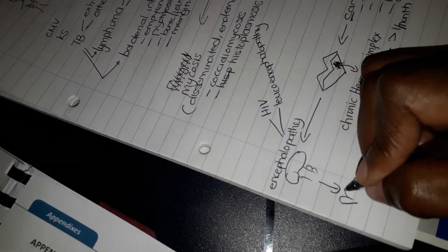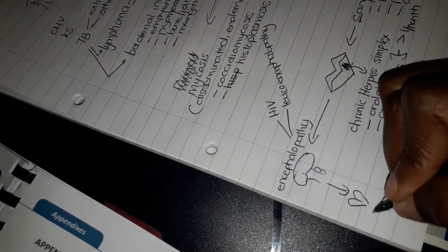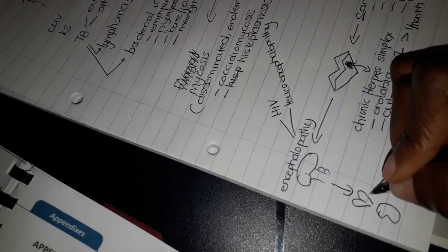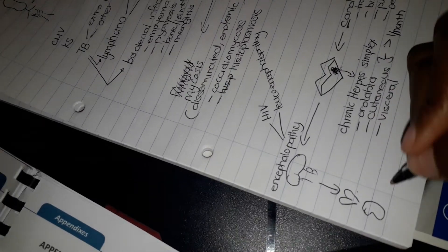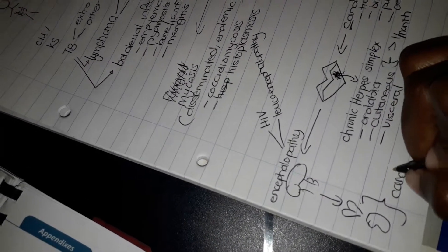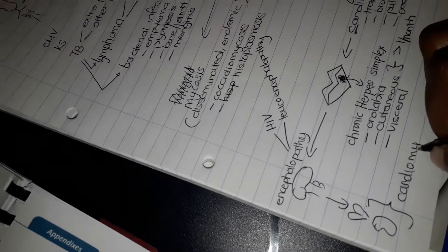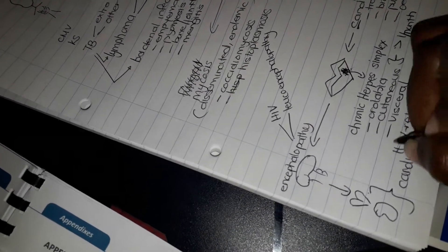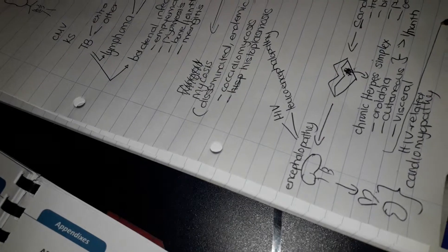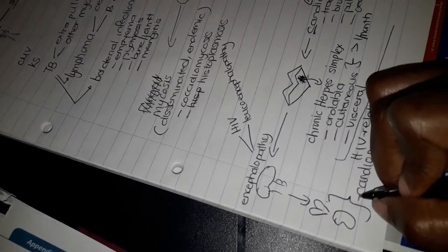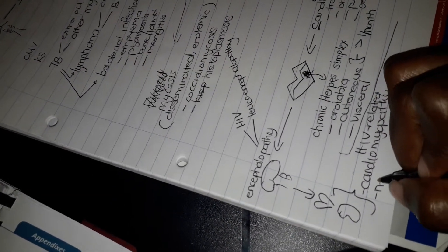We're done with the brain. Now we go to the heart and then we go to the kidneys. These, my dear friends, will remind us of cardiomyopathy, let's say HIV-related cardiomyopathy, and nephropathy.